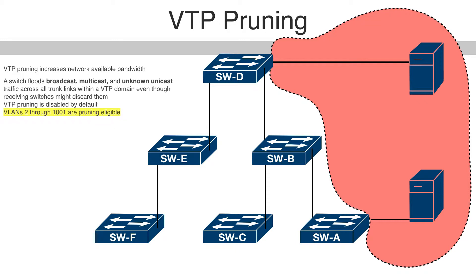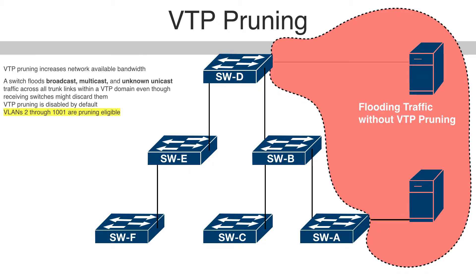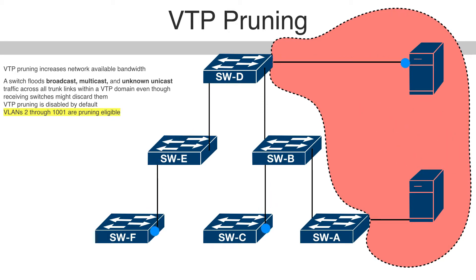VTP pruning is supported in all VTP versions. In this example of flooding traffic without VTP pruning, VTP pruning is disabled in the switched network. Port 1 on switch A and port 2 on switch D are assigned to the red VLAN. If a broadcast is sent from the host connected to switch A, switch A floods the broadcast and every switch in the network receives it, even though switches C, E, and F have no ports in the red VLAN.